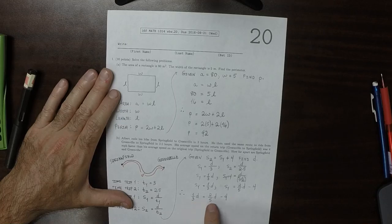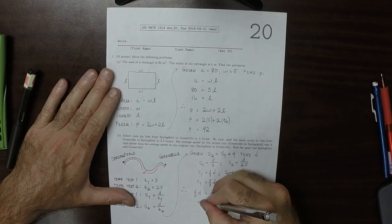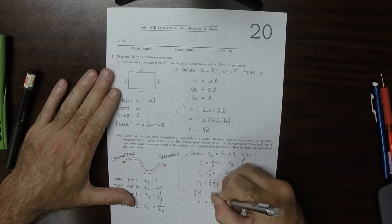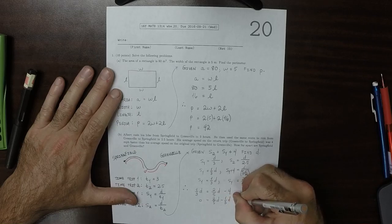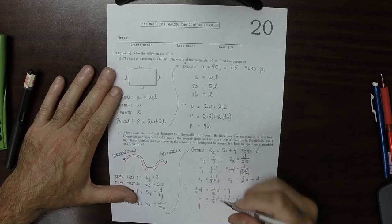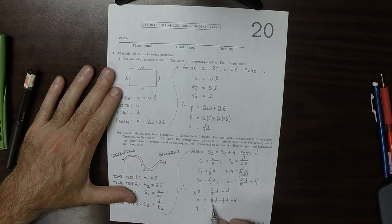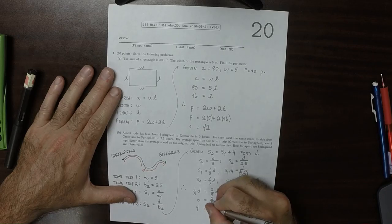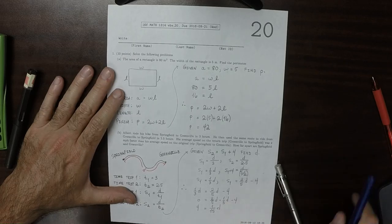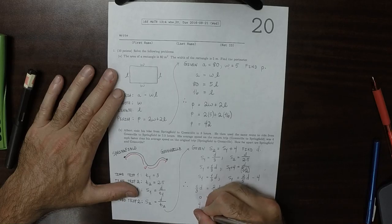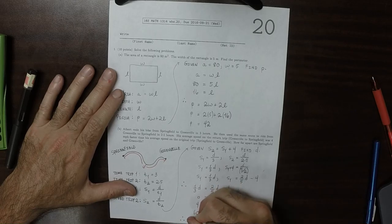It must be the case that a third D is 2 fifths D minus 4. I'll move that to the other side: 0 is 2 fifths D minus 1 third D minus 4. I'll put the 4 on the other side. 2 fifths minus 1 third, let's put it over 15. This would be 6 over 15 minus 5 over 15, so that's 1 over 15 D. If we multiply both sides by 15, we have 60 is equal to D. That's our answer. Therefore, D is 60.